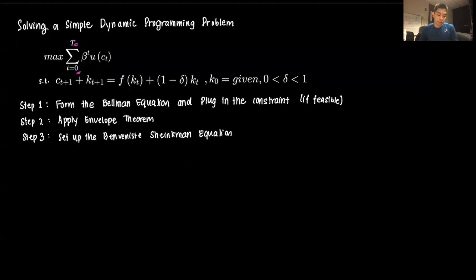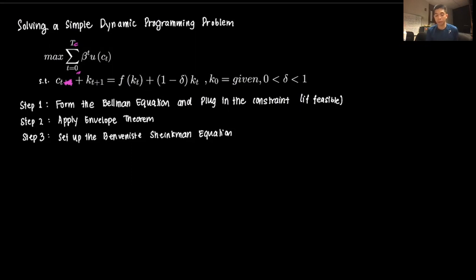The resource constraint is: ct plus kt+1 equals f(kt) plus (1 minus delta)kt. k0 is given. To solve this dynamic programming problem, we'll follow a few steps: first, form the Bellman equation and plug in the constraint if feasible — for this simple problem it is. Then apply the envelope theorem and set up the Benveniste-Schenkman equation.